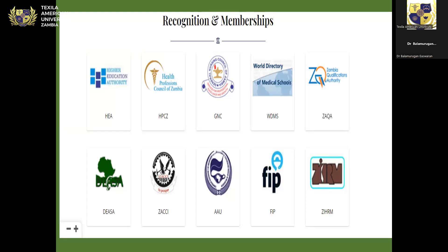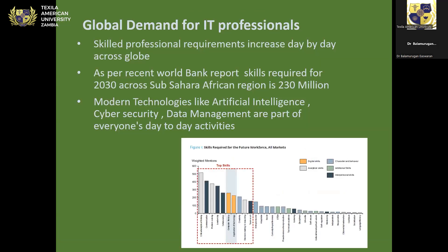Texila American University Zambia was established in 2016 and has been accredited by the Higher Education Authority of Zambia. Additionally, it has been accredited by the Health Professional Council of Zambia. Programs are registered with the Zambia Qualifications Authority. The university is a member of world directories of medical schools, the General Nursing Council of Zambia, ZAOU, the Association of African Universities, and the Zambia Institute of Human Resource Management.